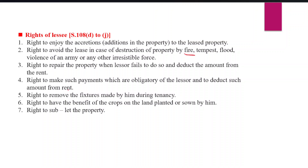Fourth is the right to make such payments which are obligatory — meaning payments that are the duty of the lessor — and to deduct such amounts from rent. Whatever obligatory payments the lessee makes on behalf of the lessor, those can be deducted from rent. Fifth is the right to remove fixtures made by the lessee during the tenancy — any furniture or other things added to the leased property.